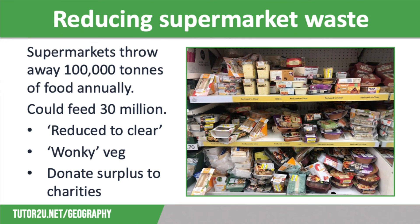More recently, things have improved. Supermarkets regularly label products as reduced to clear, like you can see on the screen, in order to sell them instead of throwing them away. They also sell at discount products which have been damaged in transit, such as tin goods which are dented, and they have started to sell ugly or wonky veg at a cheaper price than regular produce. Finally, most supermarkets now donate surplus food to charities and organisations such as food banks and those that support homeless people.